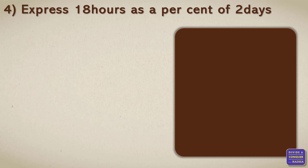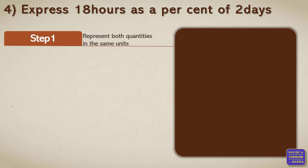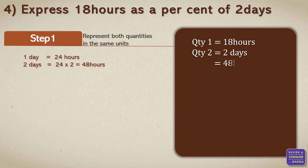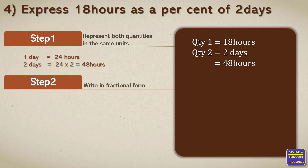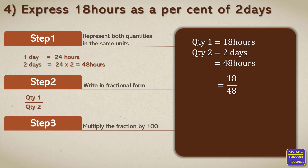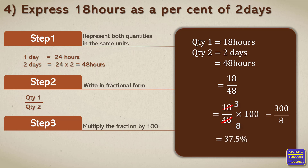Moving on to the last sum: express 18 hours as a percent of 2 days. Step one, represent both quantities in the same units. The first quantity is 18 hours and the second is 2 days. Converting days to hours: 1 day is equal to 24 hours, therefore 2 days equals 48 hours. Step two, fractional form: 18 divided by 48. Step three, multiply with 100. 6 times 3 is 18 and 6 times 8 is 48, so 300 divided by 8 gives us 37.5%. Therefore, 18 hours as a percent of 2 days is equal to 37.5%.